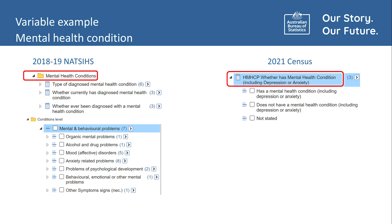For example, in relation to the topic of mental health conditions, the 2021 Census only includes one data item — whether a person has a mental health condition, including depression or anxiety — while the 2018-19 NATSIS includes the following variables: type of diagnosed mental health condition, whether currently has a diagnosed mental health condition, whether ever been diagnosed with a mental health condition, and mental and behavioural problems.